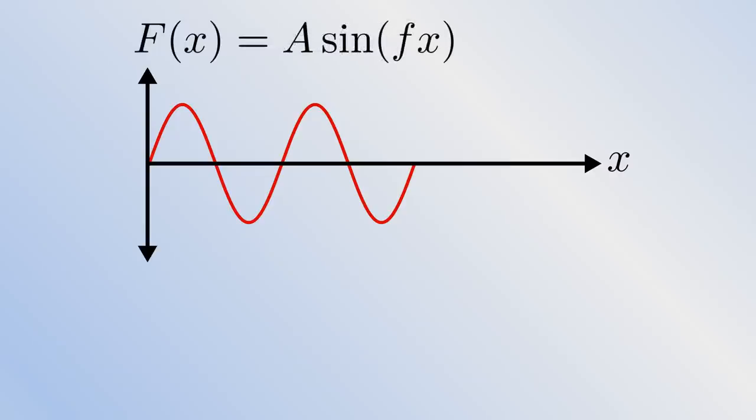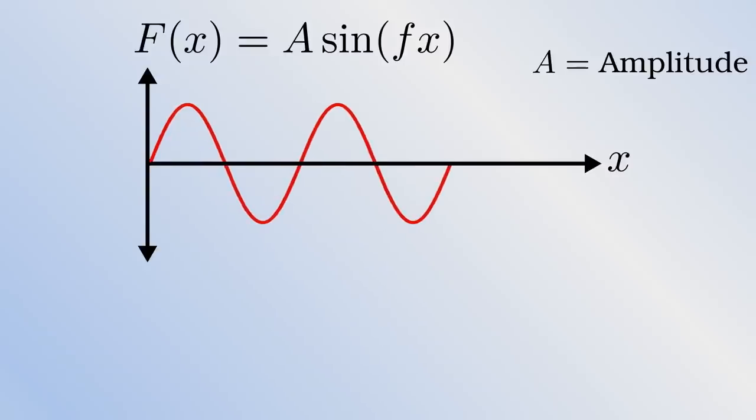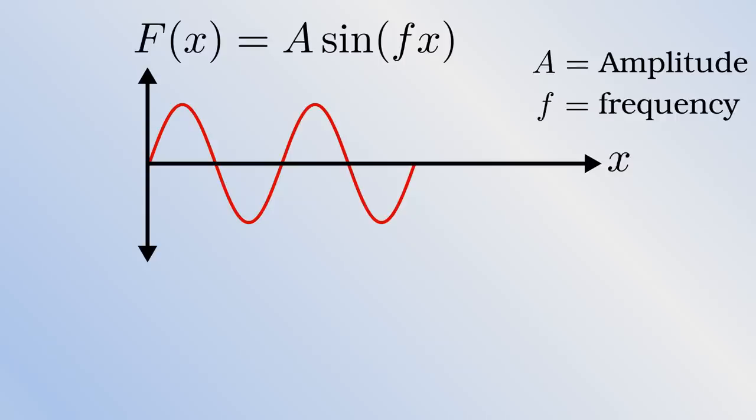Just as before, we can use two numbers to manipulate this wave. One will stretch it vertically, usually called the amplitude, the height from the middle up to the peak or down to a trough. The other will stretch it horizontally, usually called the frequency, namely how frequently the peaks or troughs appear. The higher the frequency, the more often the wave repeats itself.